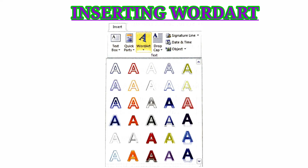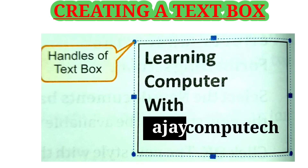Word will automatically create a text box for your text and apply the style to the text. Creating a text box: select the Insert tab, click on the Text Box button in the Text group, select the Draw Text Box option from the drop-down menu, then click and drag the mouse pointer on the document to create the text box.